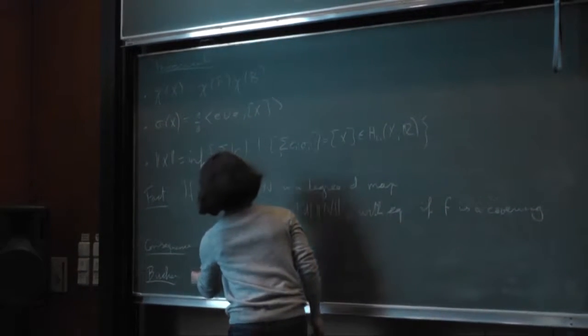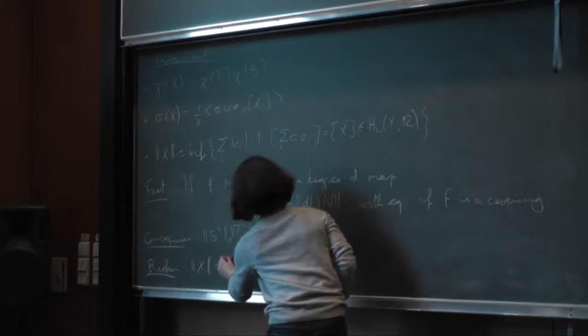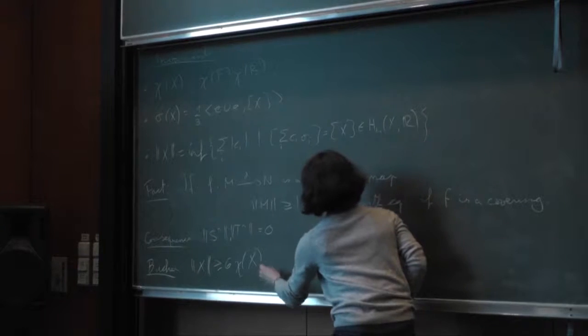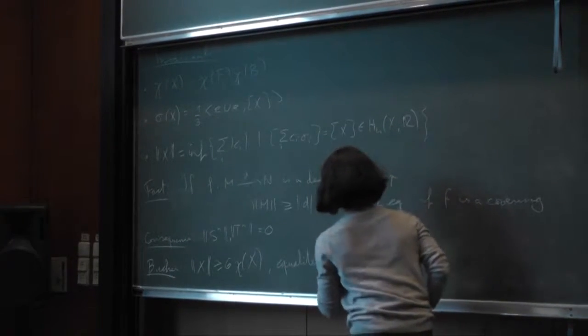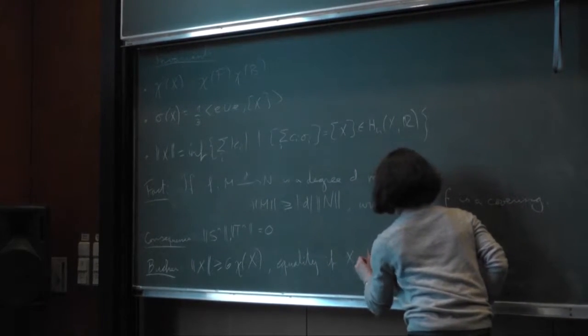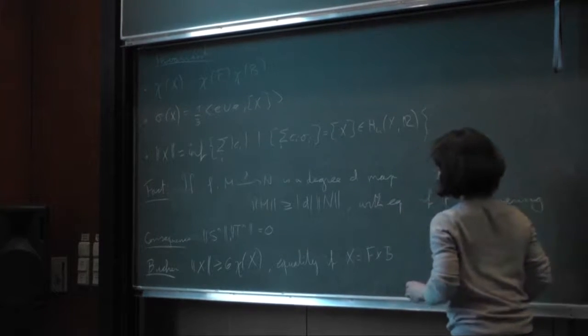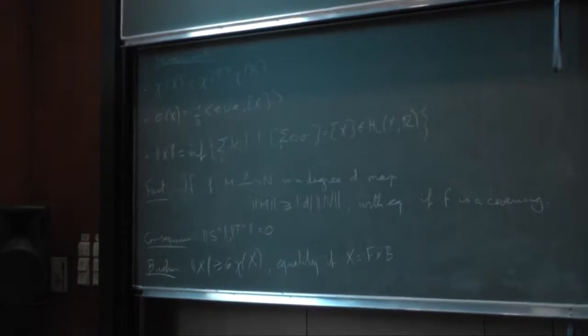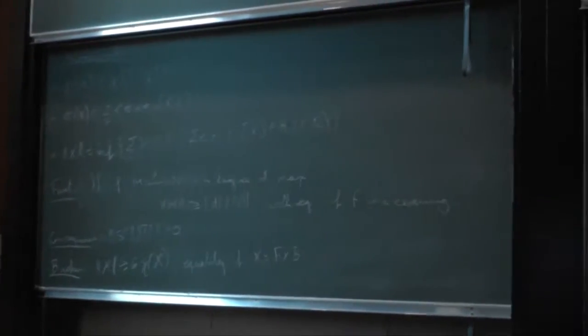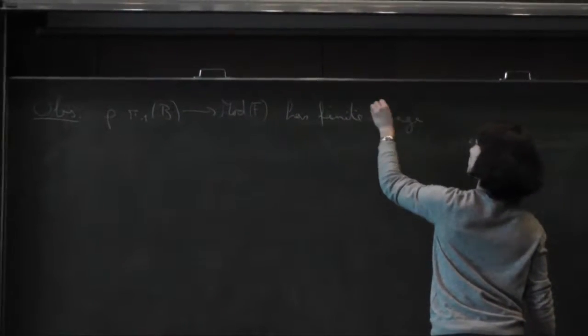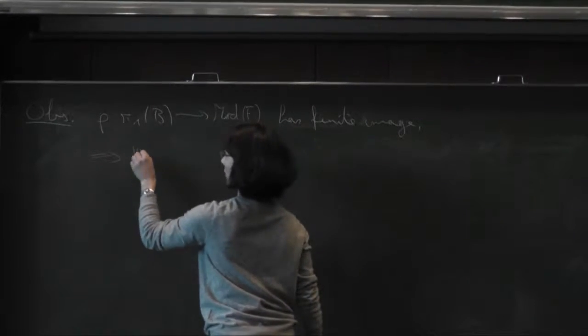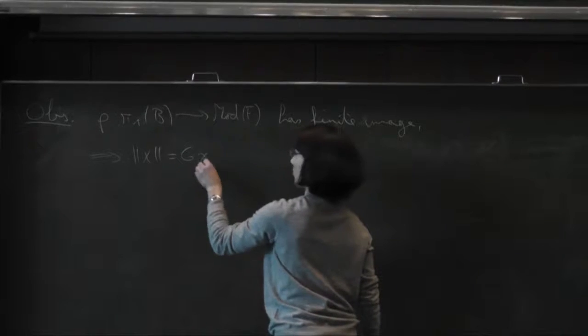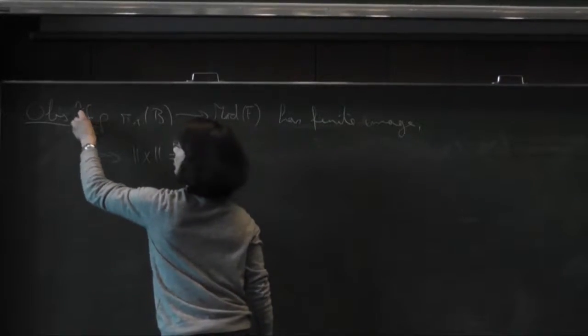So for a surface bundle as above, the simplicial volume of X is at least six times its Euler characteristic.